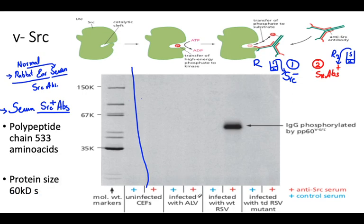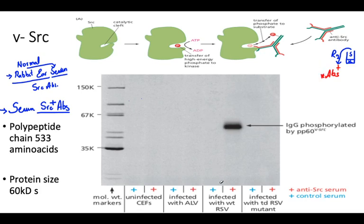Then cells were infected with wild-type Rous Sarcoma Virus. The difference between Rous Sarcoma Virus and Avian Leukosis Virus is the presence of SARC. When exposed to RSV, a band appears — a single band indicating the presence of the sarcoma peptide at 60 kDa, slightly higher, proving the presence of the phosphorylated form of SARC protein.